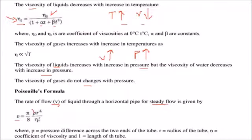R is the radius of the tube, eta is the coefficient of viscosity, and L is the length of the tube. This is the rate of flow of liquid through horizontal pipe. It has to be a steady flow, Poiseuille's formula.